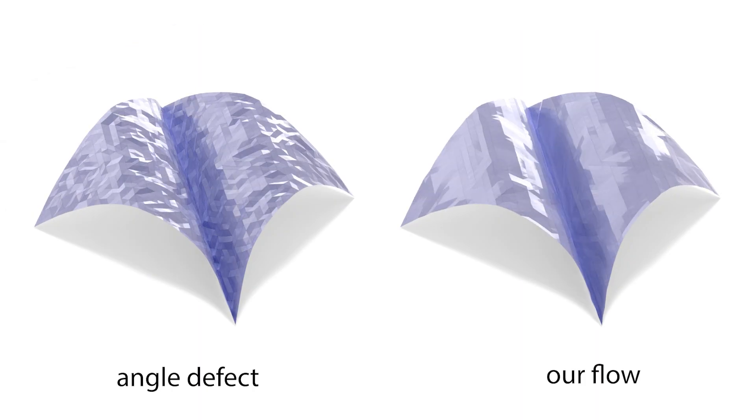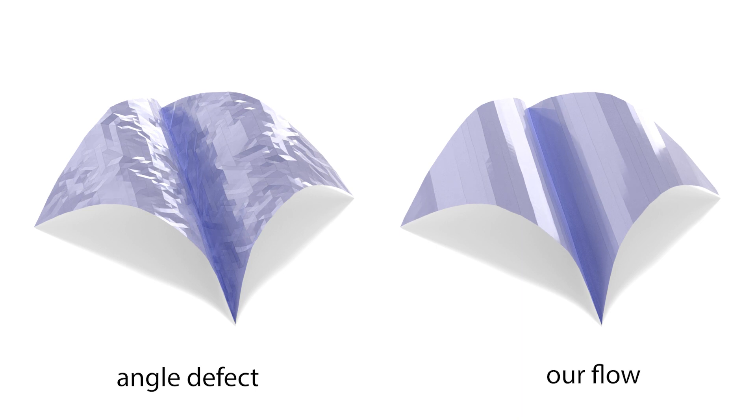Similarly, minimizing our energy decrumples this paper, resulting in smooth ruling lines. Minimizing the squared angle defect can give crumpled results. This is because the angle defect does not capture the notion of ruling lines.